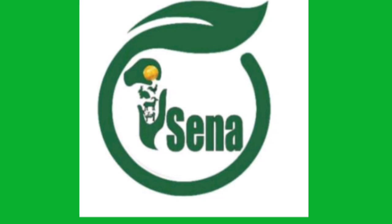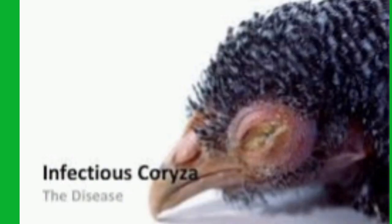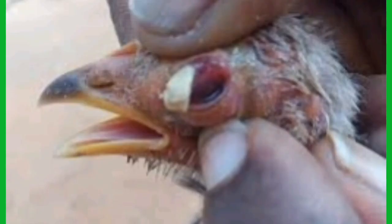Welcome back to Usenia Solutions. Last time we talked about infectious coryza — how to identify this disease in your flock. We discovered many factors that help us recognize this disease. Today we're going to look at how we can get this disease and where the possible places are that we get it.